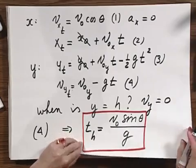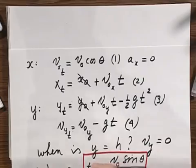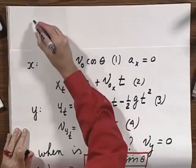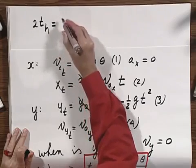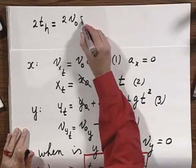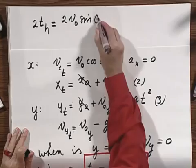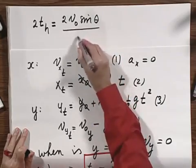since the time of flight, the whole trajectory, is two t of h, is therefore two times v zero times the sine of theta divided by g,